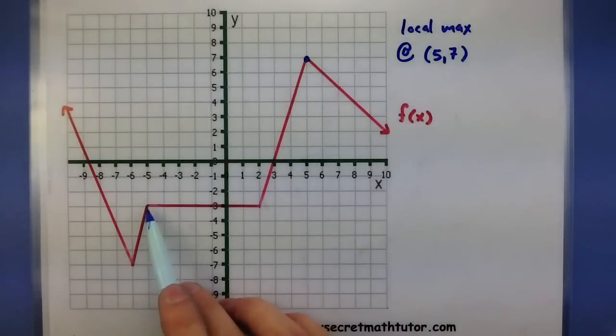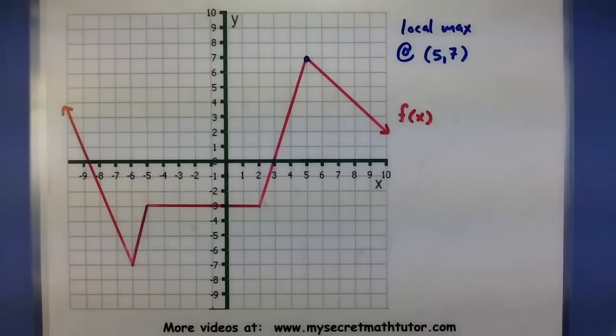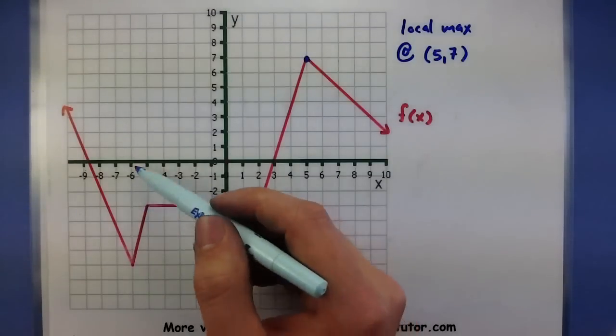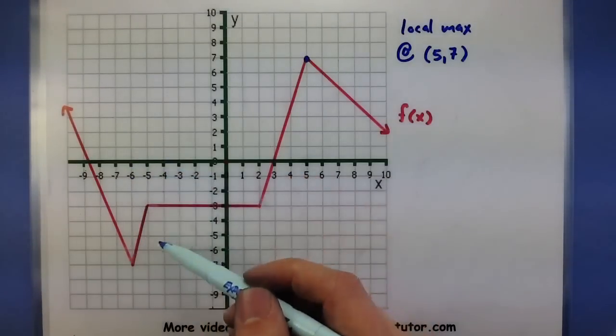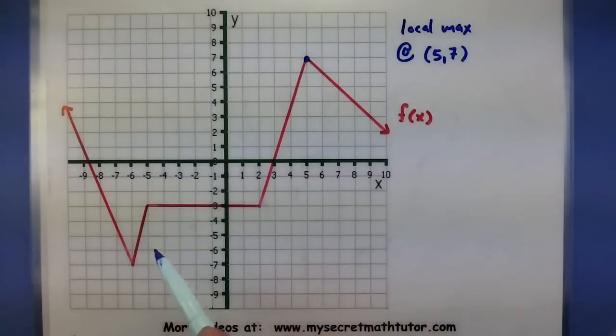Now you may be wondering, well, what about this corner here? Is it a local max? And the answer is actually no. If I try and look at an interval, say, between negative 6 and negative 4, this point is not the highest point in there. There's lots of other points that are equally as high. So it must be the highest of that interval.